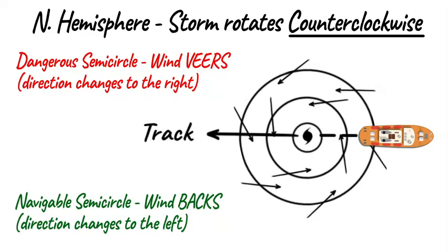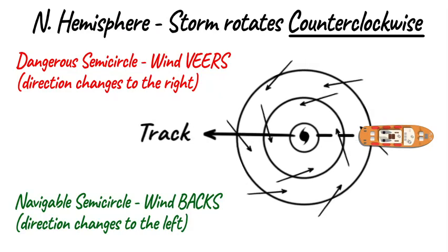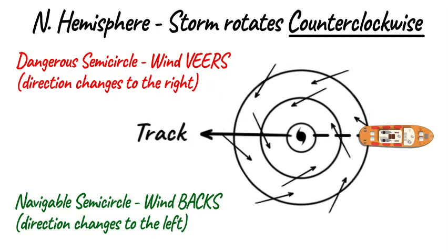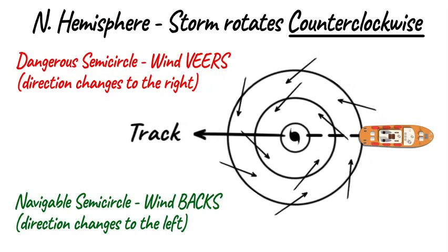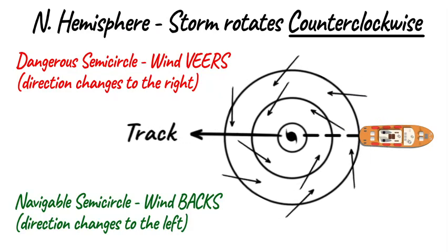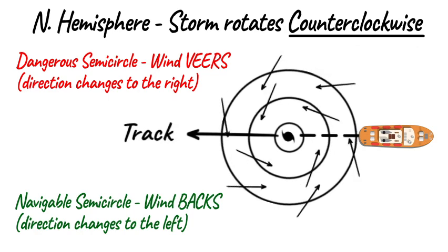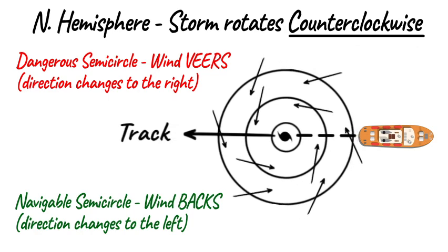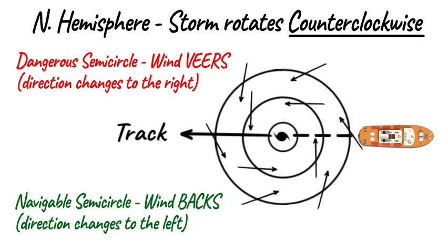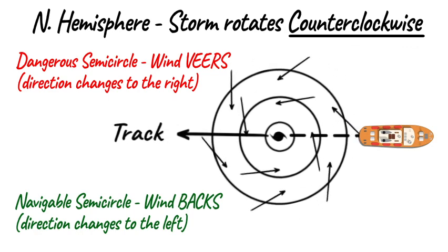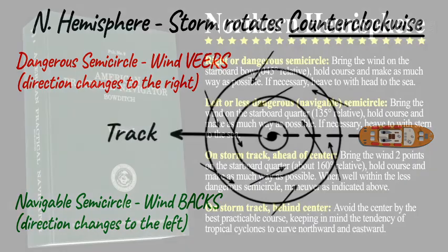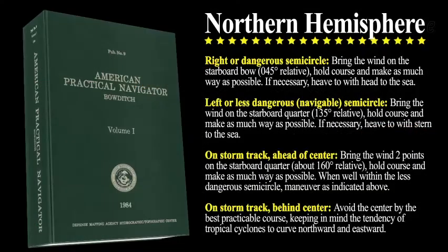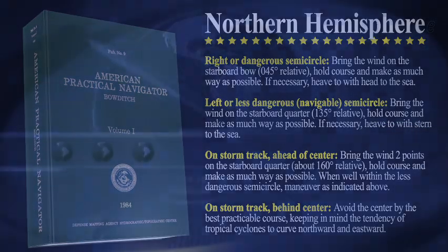On-storm path behind storm center: If the wind direction is steady, or nearly steady, with increasing atmospheric pressure, the ship is most likely on the storm path behind the storm center. Continue the course that results in increasing atmospheric pressure.